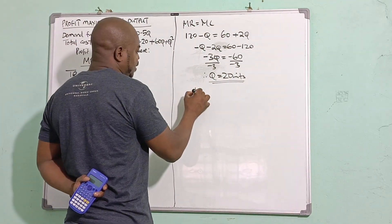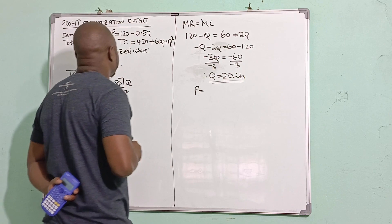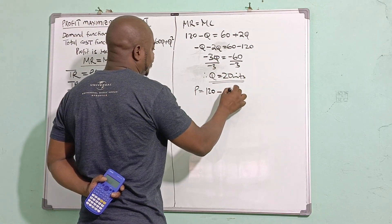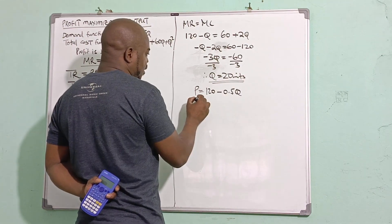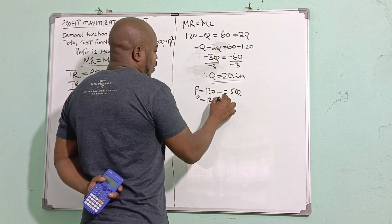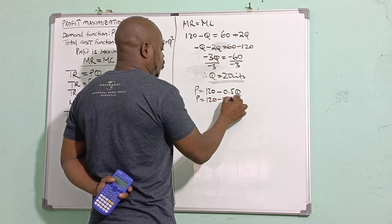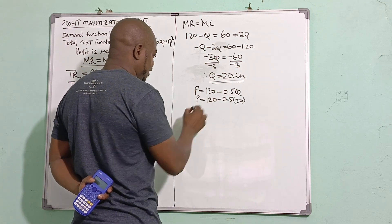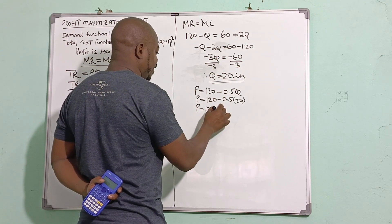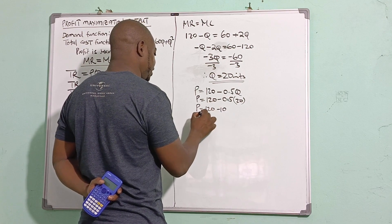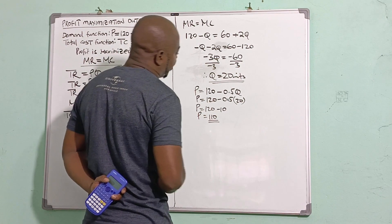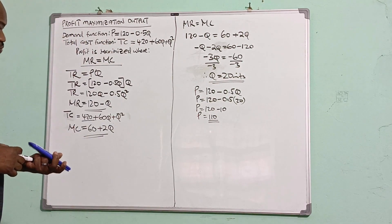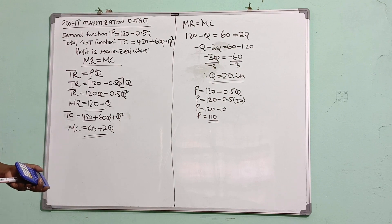I can now find the price at this profit-maximizing output level. Substituting Q = 20 into the demand function: P = 120 - 0.5(20) = 120 - 10 = 110. So the price is 110.